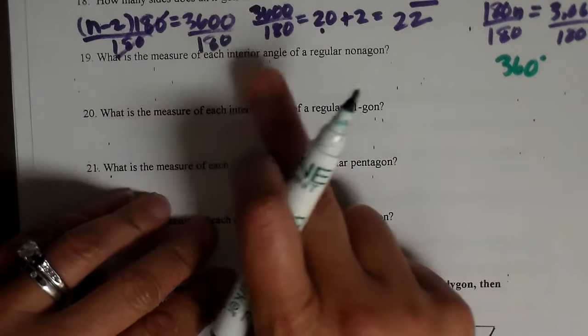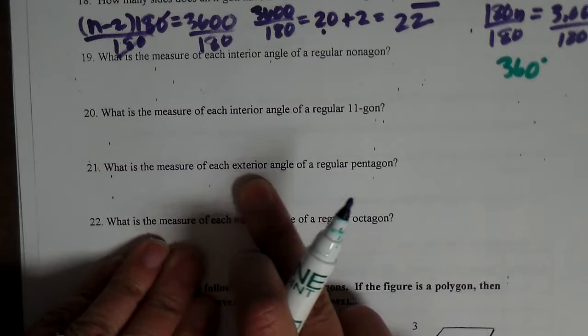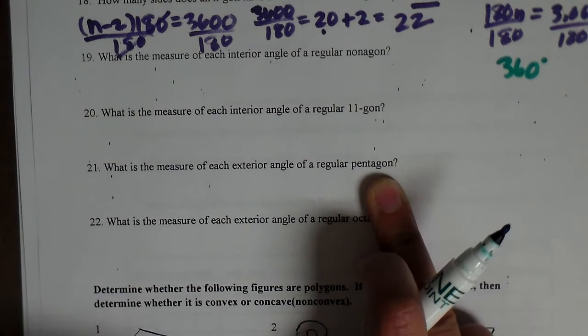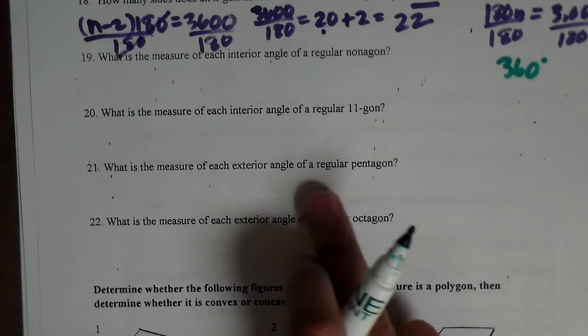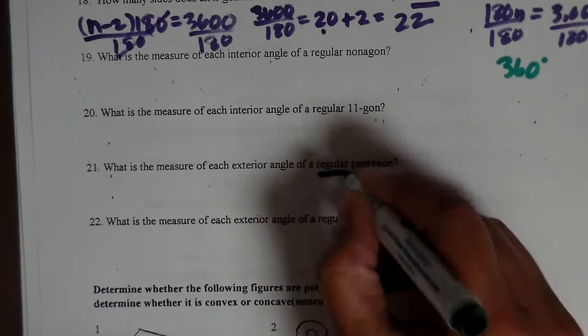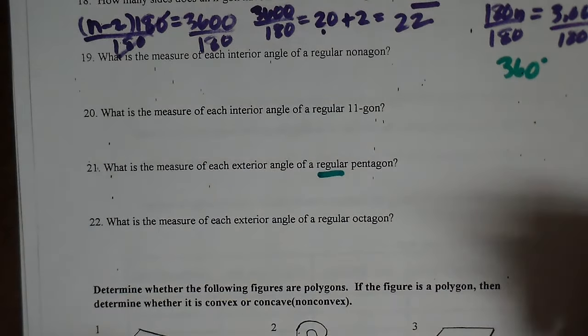So what is the measure of each exterior angle of a regular pentagon? If I want to look at each exterior angle of a regular pentagon, well, if it's regular, what does that tell me about the pentagon? All sides are the same and all angles are the same. So I know each one has the same value.